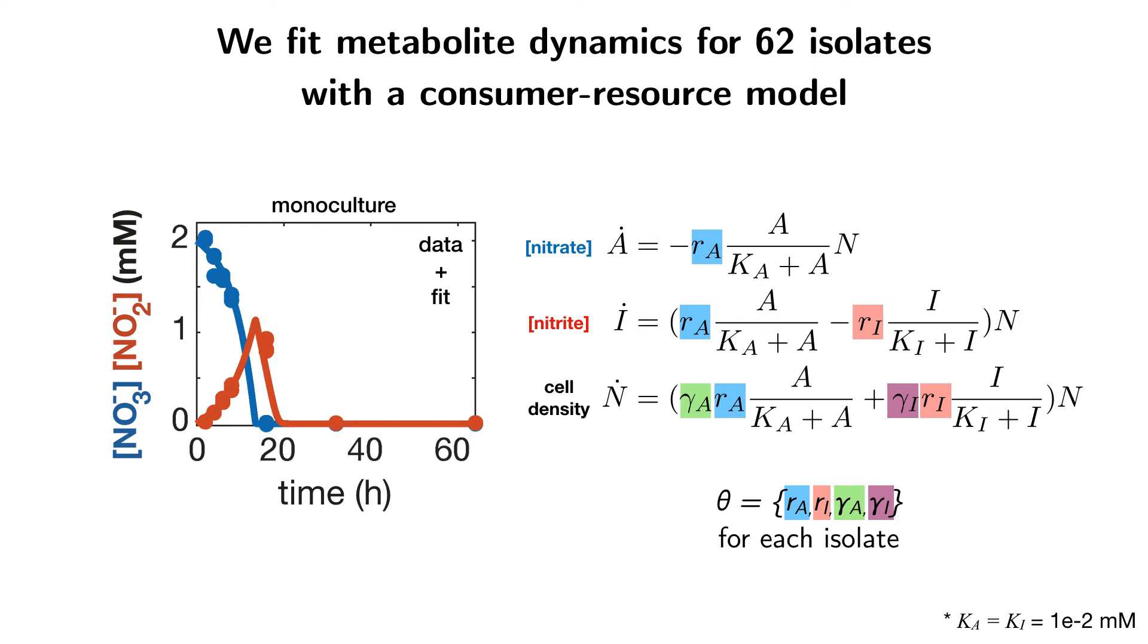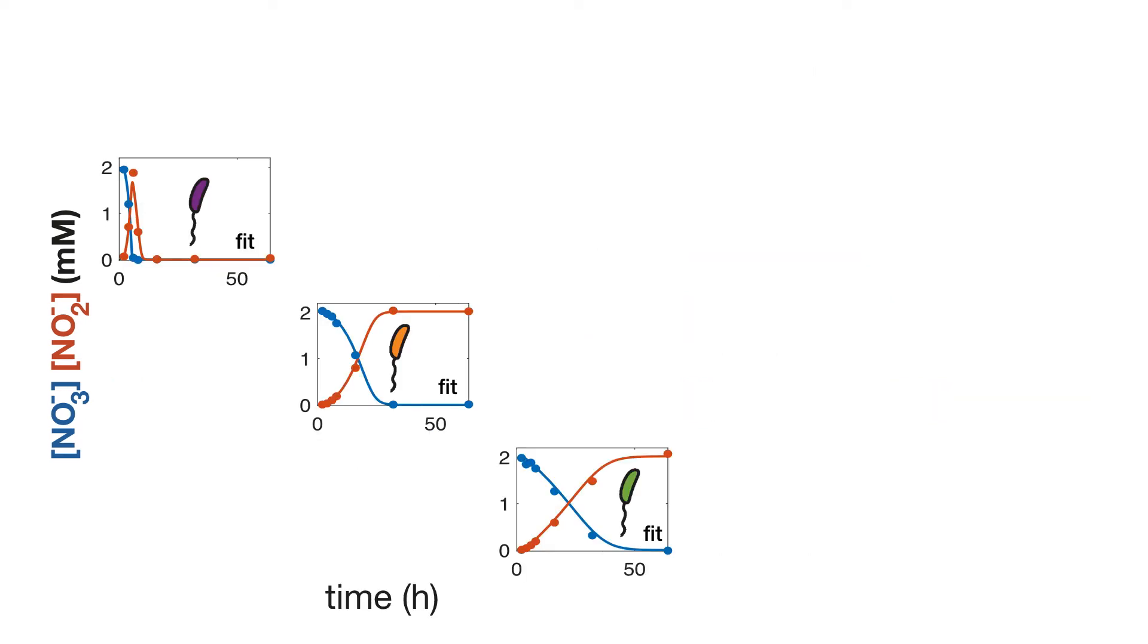We can test this prediction using pair culture experiments. Here I'm showing the monoculture data and fits for three different strains. I'm going to show the results of pair culture experiments of each of these three strains along with the model prediction.